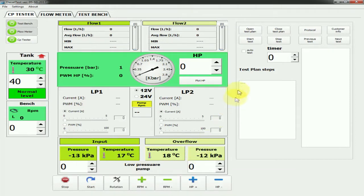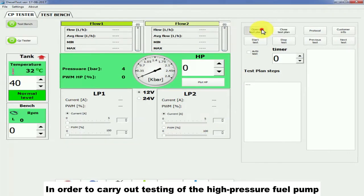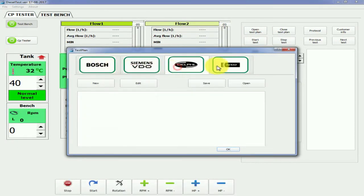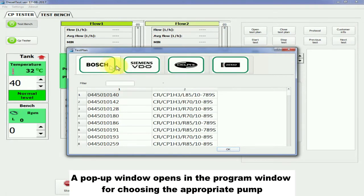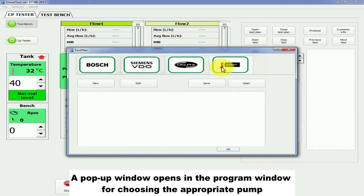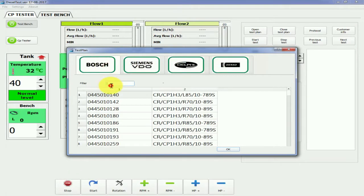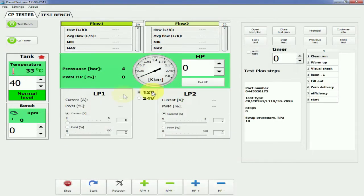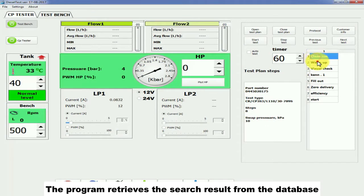In order to carry out testing of the high-pressure fuel pump, press the button Open Test Plan. A pop-up window opens for choosing the appropriate pump. Enter the pump number in the search filter. The program retrieves the search result from the database. Choose the pump of interest.